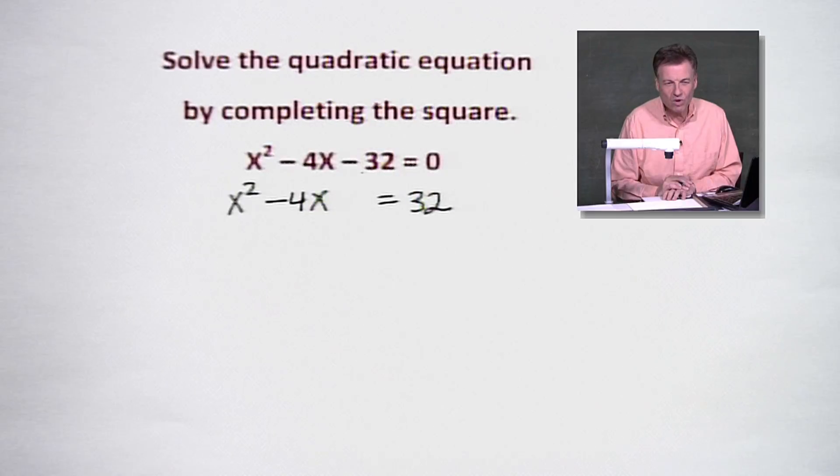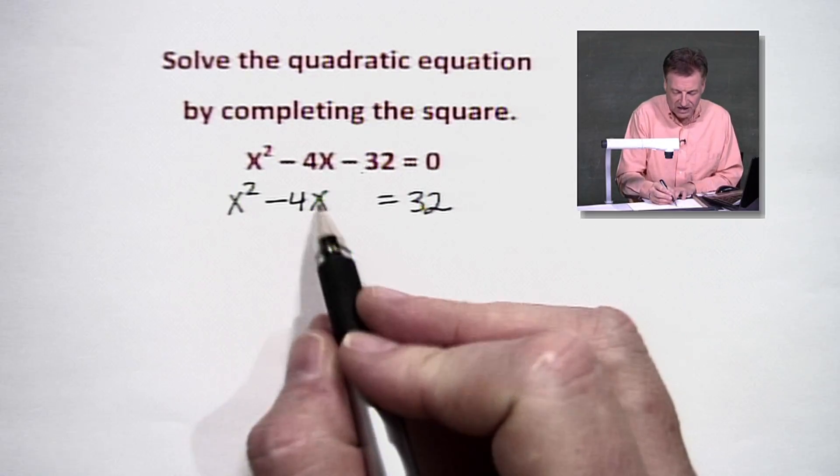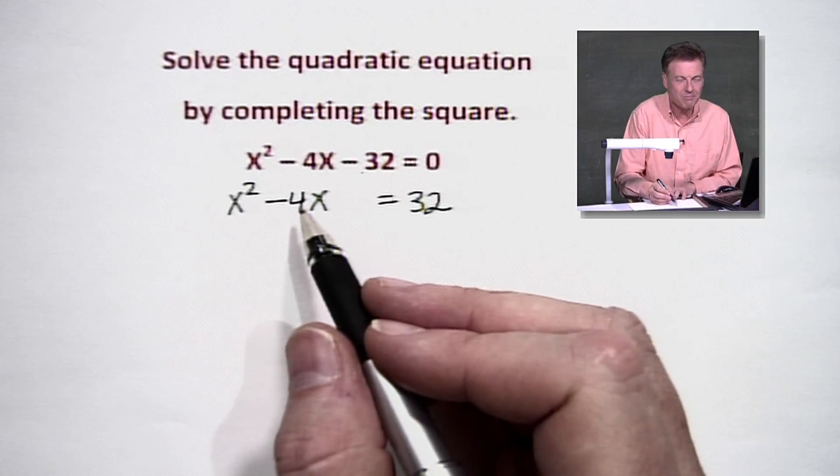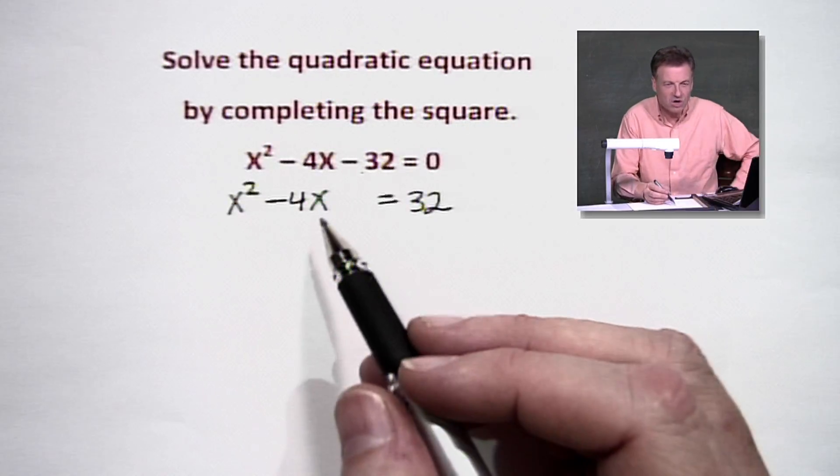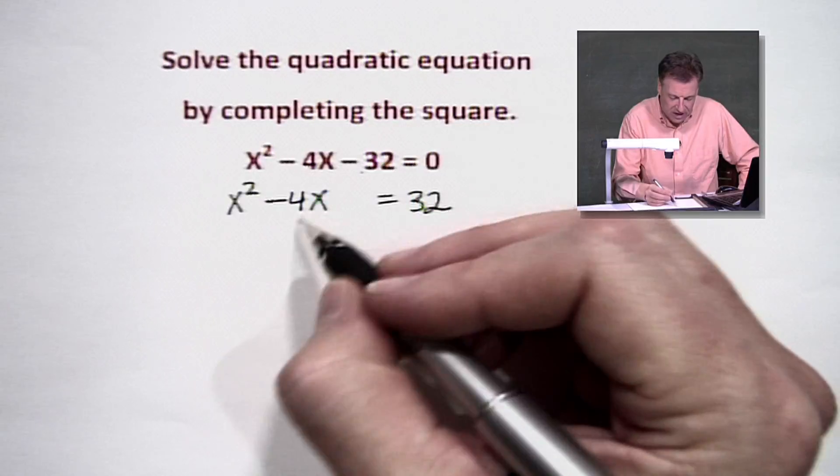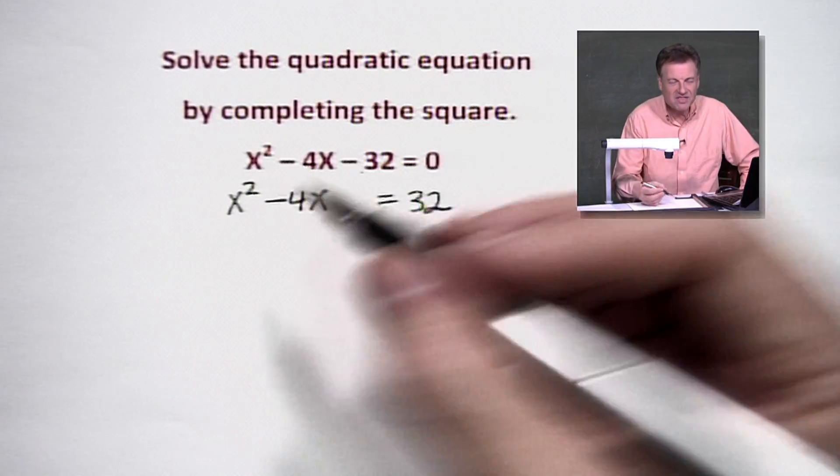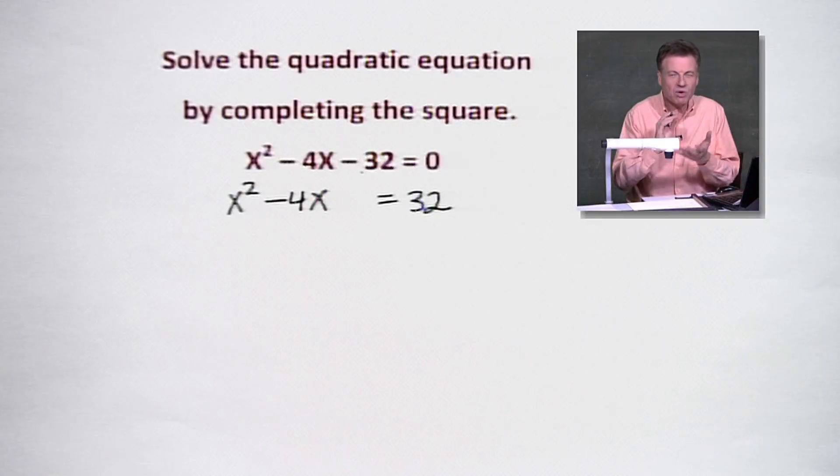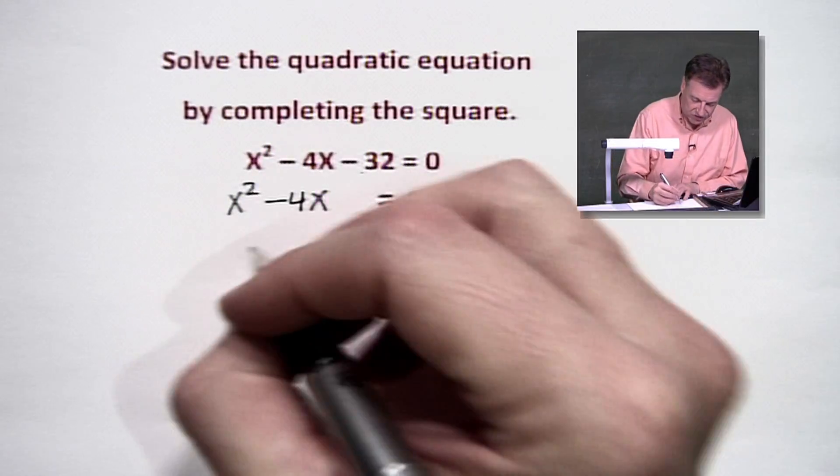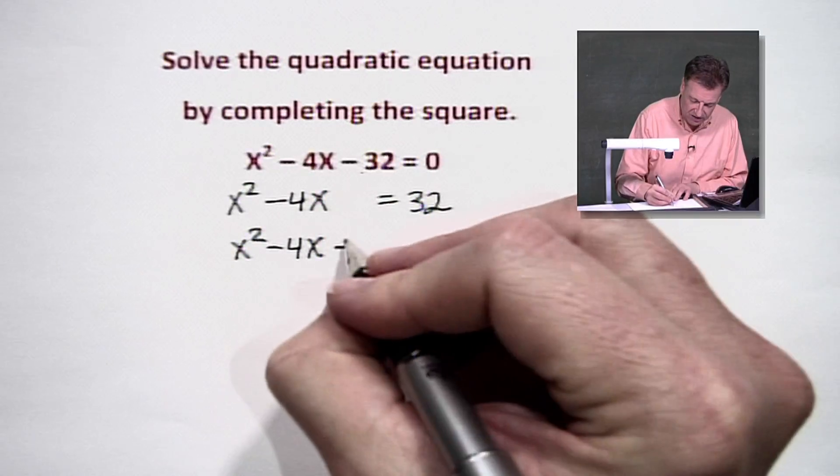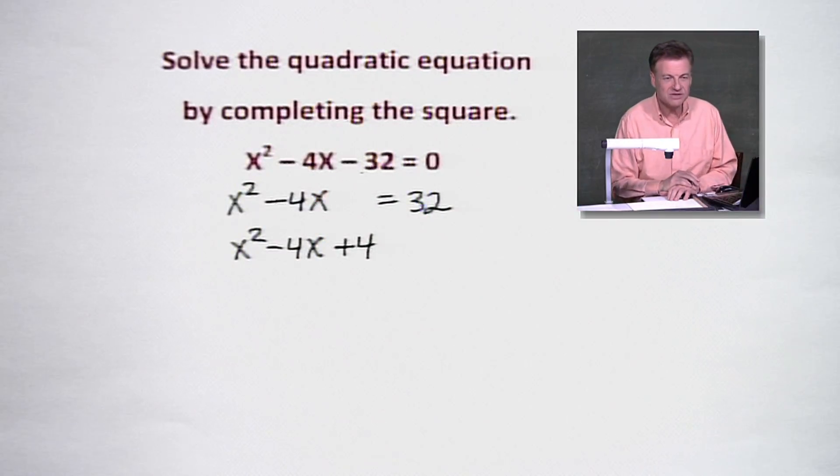Now, what are we going to do? We're going to complete the square. Right here is the mechanism. This is the mechanism that we're going to worry about. We're going to take half of this number next to x. Now, this number is a negative 4. We're going to take the minus with it. Half of that is a negative 2. Now, what are we going to do with the negative 2? We're going to square it. Hey, that's why it's called completing the square. So we're going to take that x squared minus 4x and we're going to add 4 to it right there to complete the square.